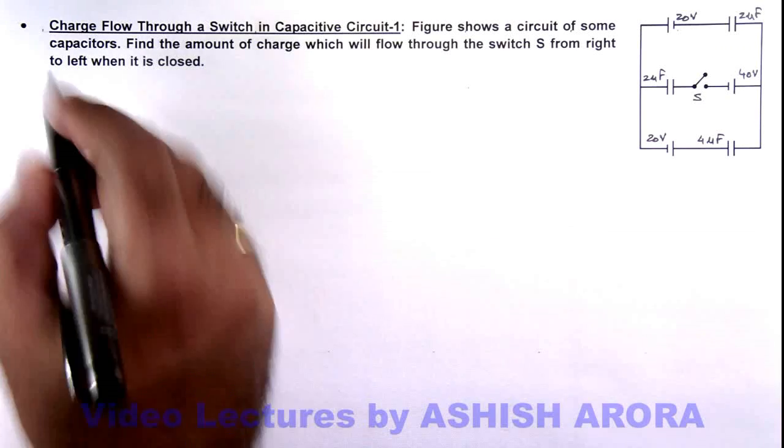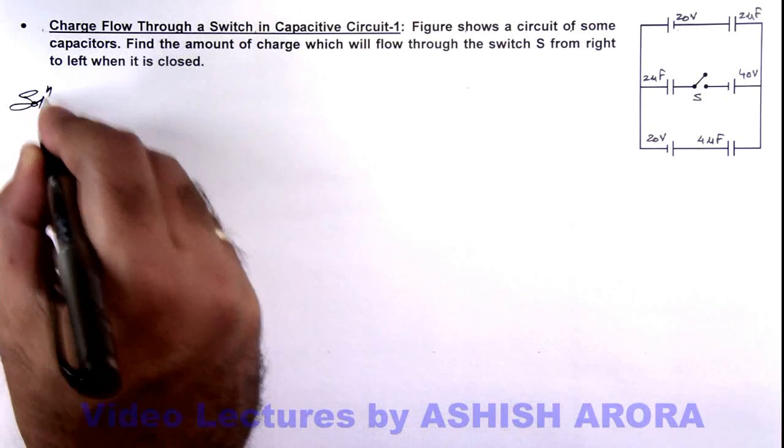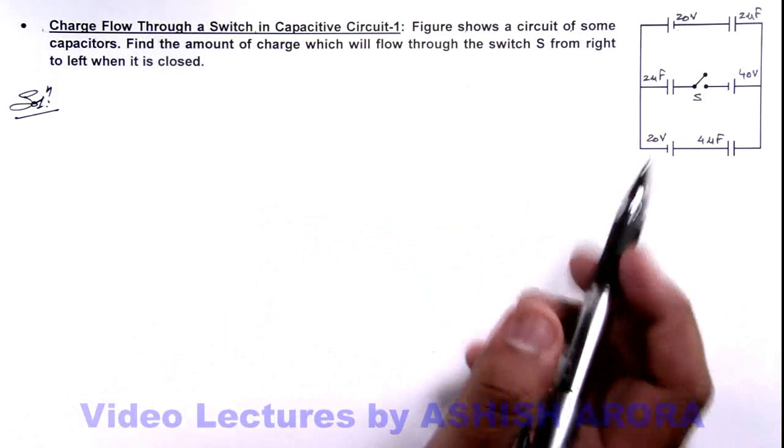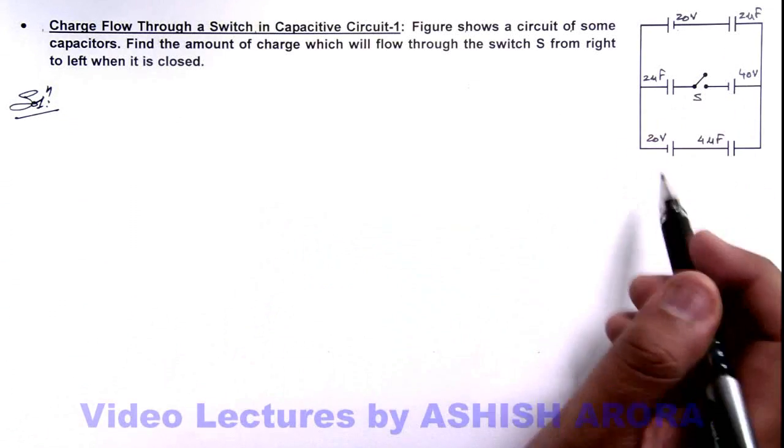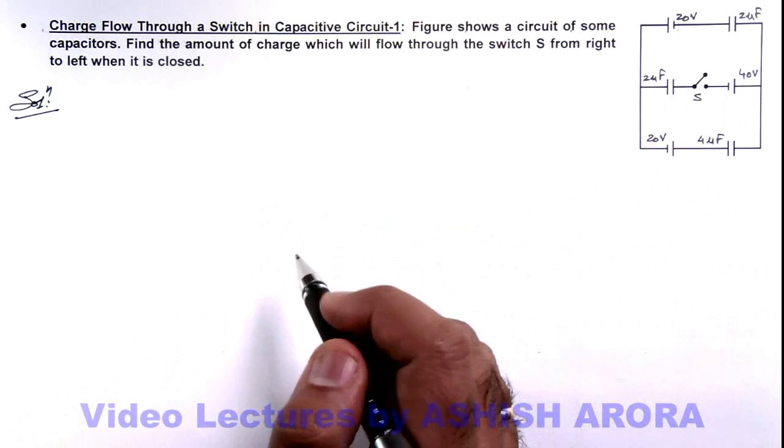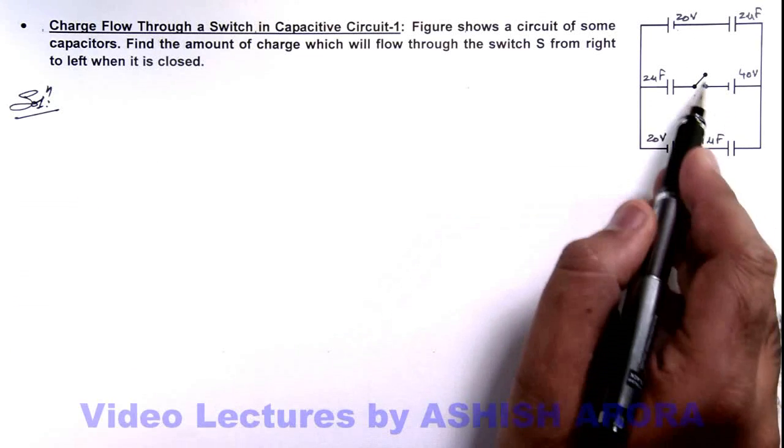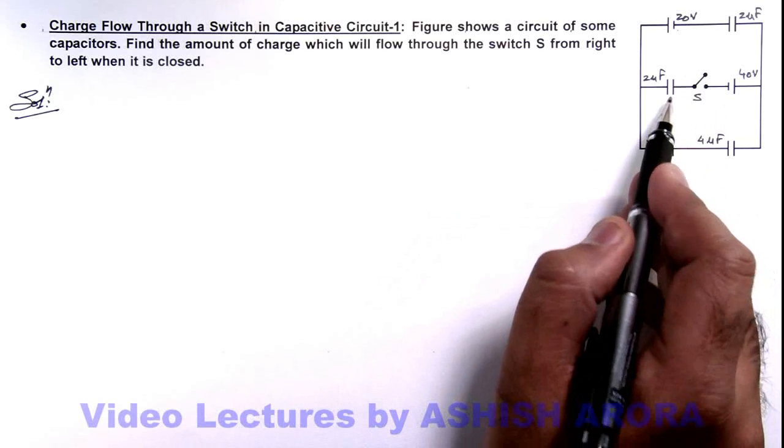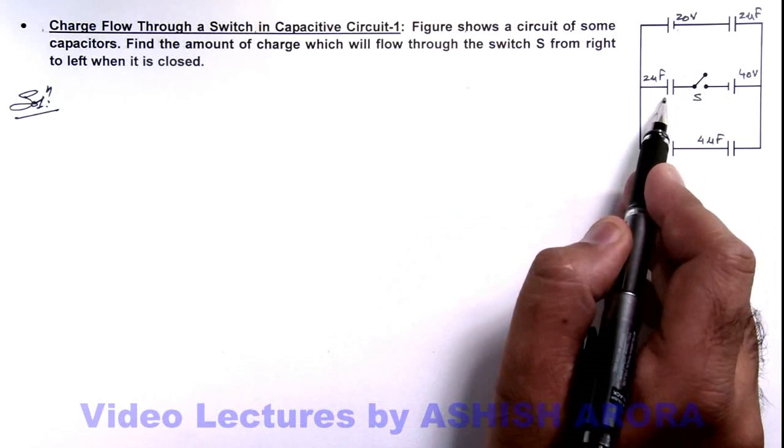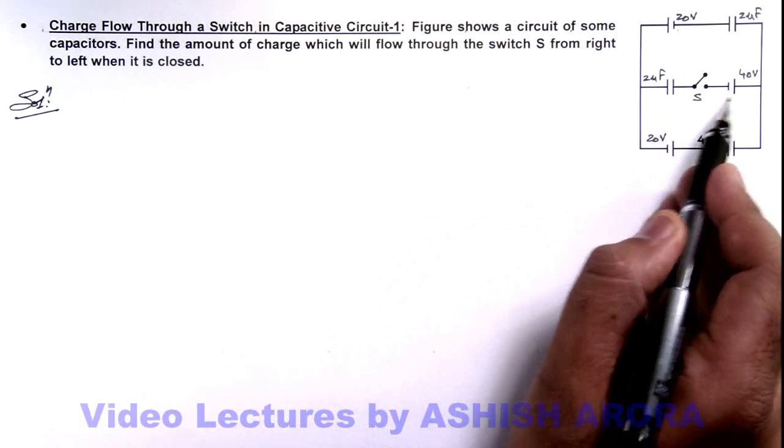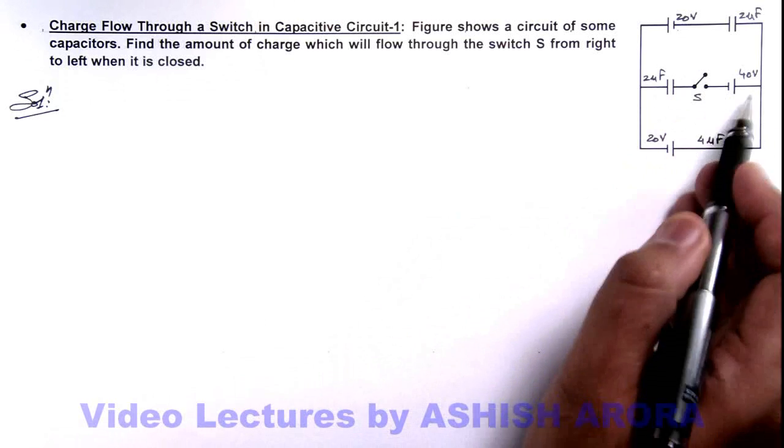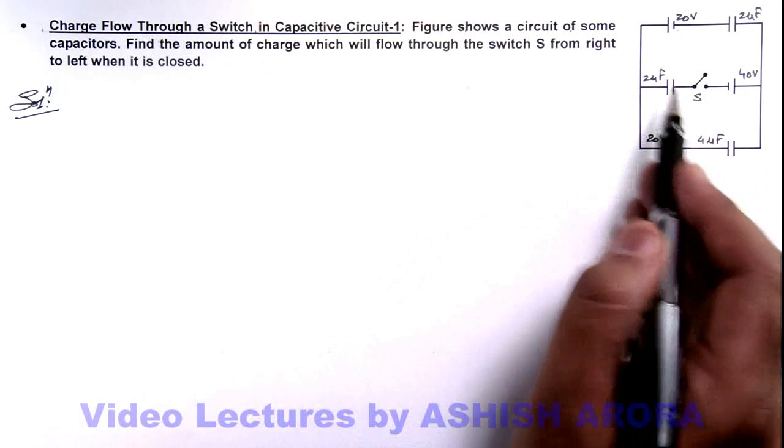In this situation, we'll solve the problem in a similar manner as we have done earlier. First, we find out the charges on capacitors before closing the switch. When the switch is open, these two devices—this 2 microfarad capacitor and this 40 volt battery—are isolated from the circuit, so on this 2 microfarad charge will be zero.